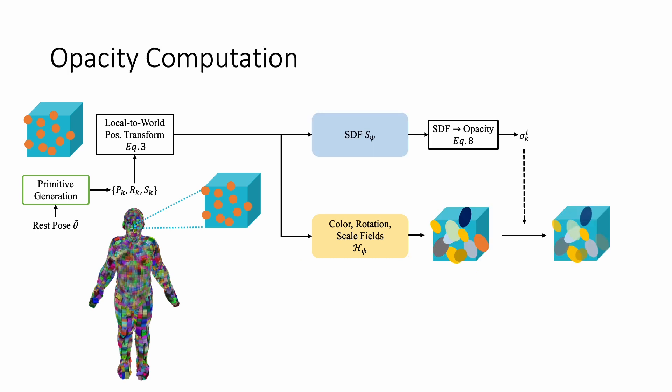We further learn a neural signed distance field that outputs the SDF value of each Gaussian, which is then converted to its opacity by a bell-shaped kernel function. This design connects 3D Gaussians with an SDF-based surface representation. The SDF can be used to extract a differentiable mesh and apply various losses to regularize the geometry of the 3D Gaussians.